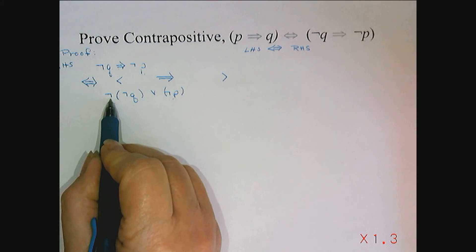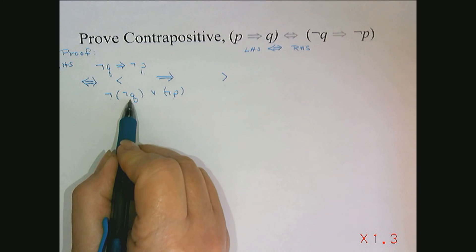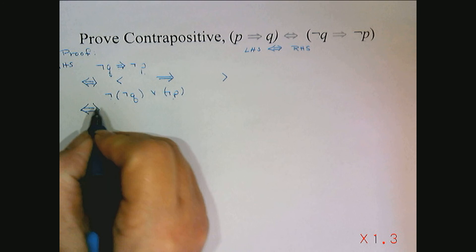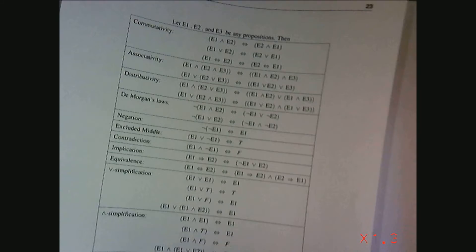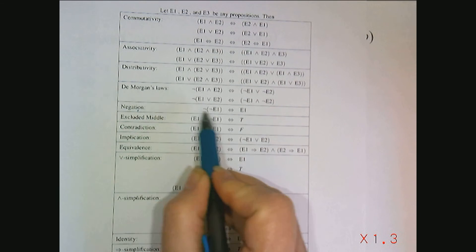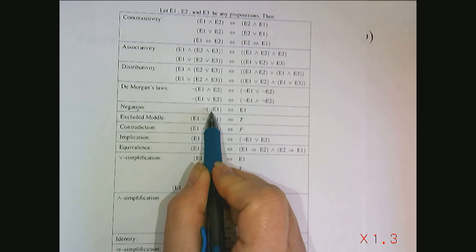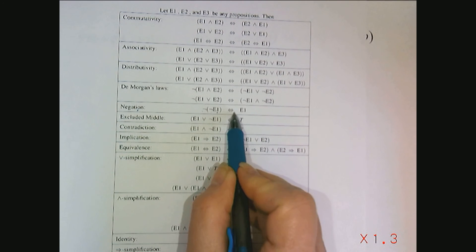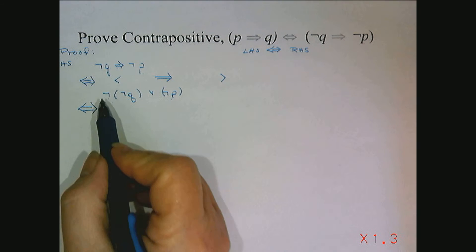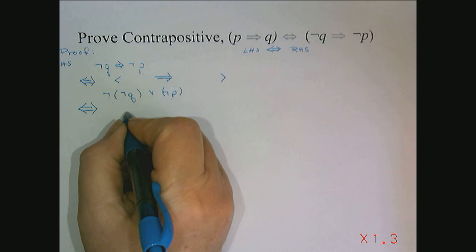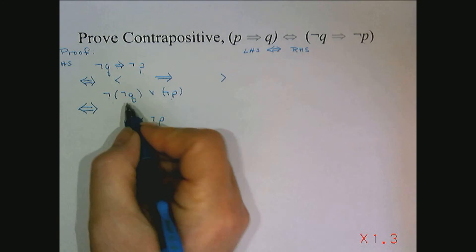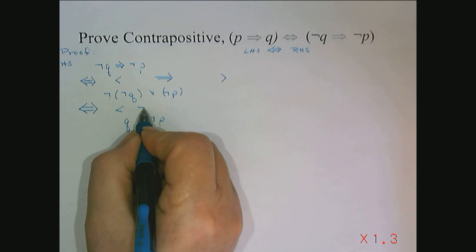I notice I have a negation of a negation. One of the basic laws says that the negation of the negation of an expression is equivalent to the original expression. So not(not Q) or not P becomes Q or not P, and that's by the negation law.